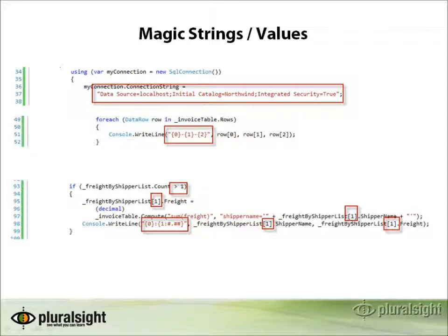There are quite a few examples of magic strings or values in this code. The first one is the connection string being hard-coded throughout the code — this is not a good practice and something we should move to a more secure and single location that defines our connection strings for the application. Formatting strings are also specified in many different locations, as well as blocks of for-each logic to dump things to the console. If at some point we want to change how this data is formatted or where it's displayed, these would need to be updated in many different locations. Another section uses magic numbers — the number one is specified in multiple locations without any indicator of why it is significant.